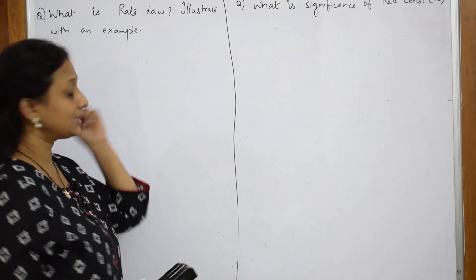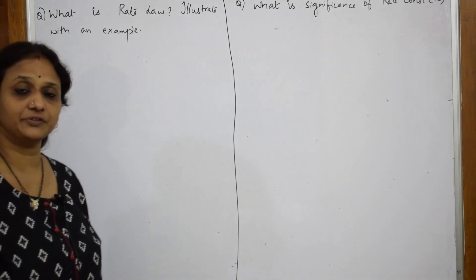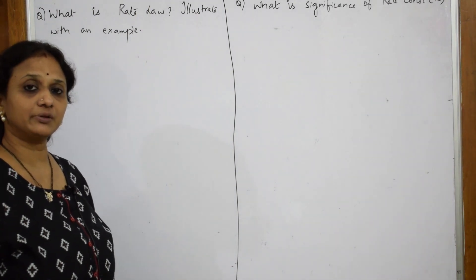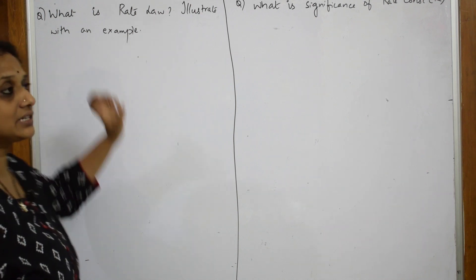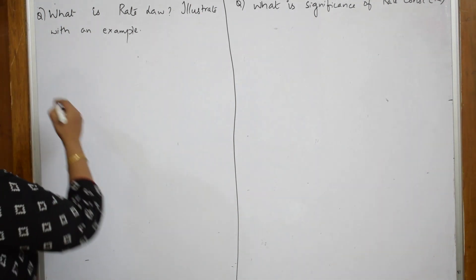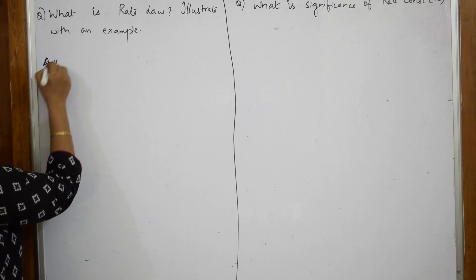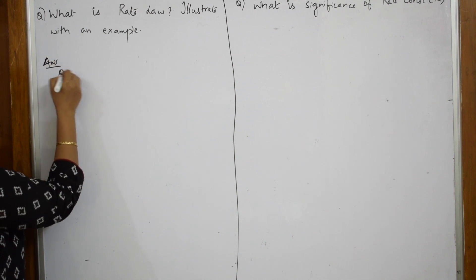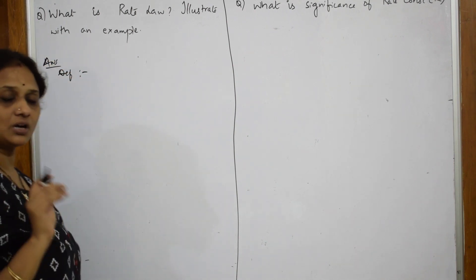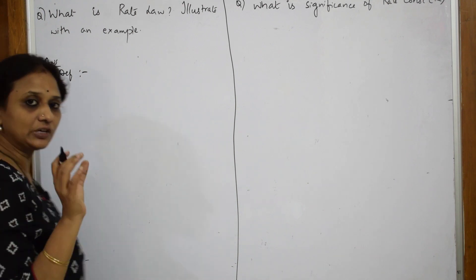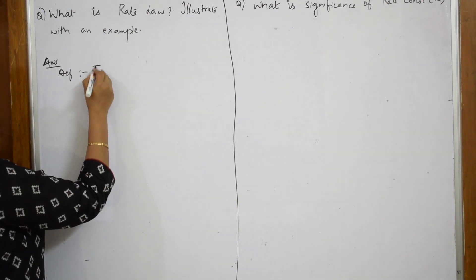So let us come back and do this particular definition. I have given it in the form of a question. Let us read: What is rate law? Illustrate with an example. Once this question is given to you, write your answer and start with the definition. How should you start the definition? Your board answer key will be like this only — just write the equation.